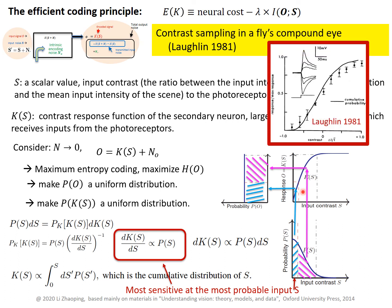This is the actual finding by Loughlin. This shows the input contrast and the contrast response function. The data points are his measurements of the contrast response function in the actual fly, and the solid curve is the prediction from maximum entropy coding. You can see the prediction agrees quite well with the data.